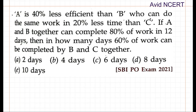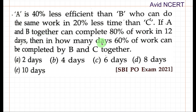Hello viewers, welcome to my channel, this is Geeta. Today I will be solving a question from the SBI PO exam 2021 question paper. The question: A is 40% less efficient than B, who can do the same work in 20% less time than C. If A and B together can complete 80% of the work in 12 days, then in how many days can 60% of the work be completed by B and C together?